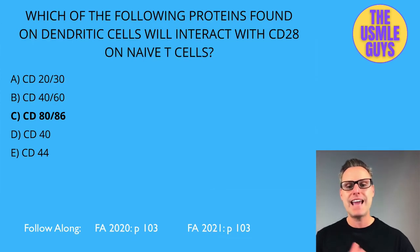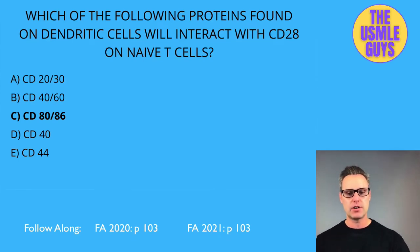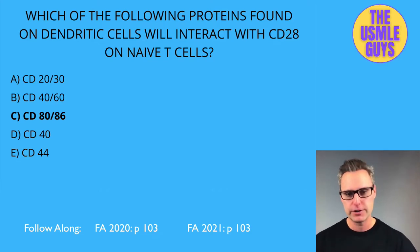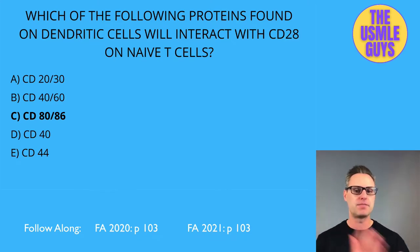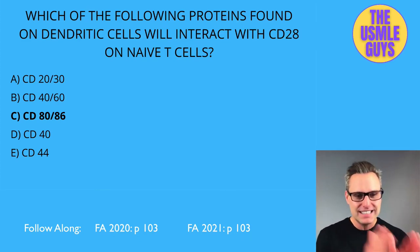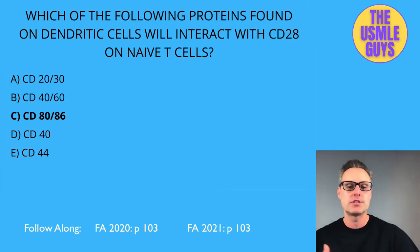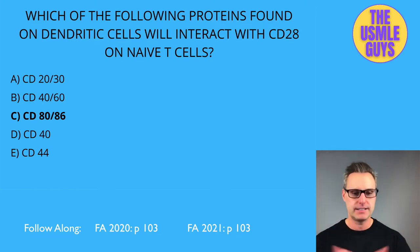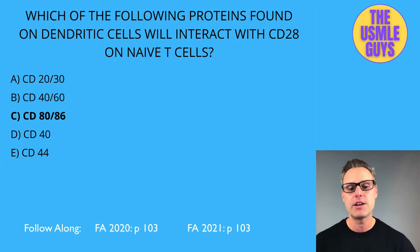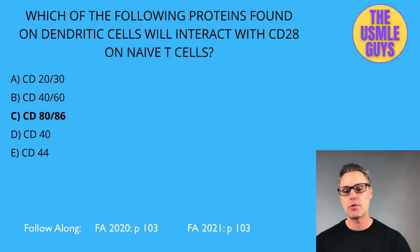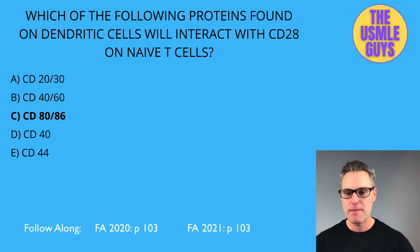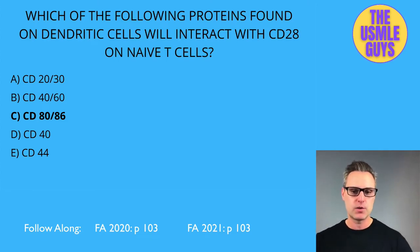The correct answer to this question is CD80/86. Let's look at B and T cell activation and class switching. T-cell activation starts when a dendritic cell engulfs and processes an antigen. In step two, the antigen is presented on MHC1 or MHC2 of the dendritic cell and is recognized by the T-cell receptor — MHC1 matches up with CD8, MHC2 matches up with CD4.